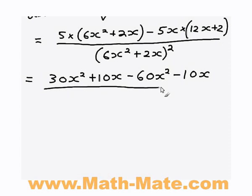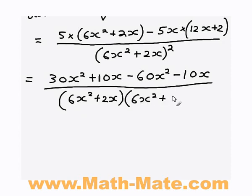Don't forget about the bottom part of the fraction. Now what I'm going to do here is actually instead of writing the squared sign, I'm going to write out the brackets twice. So 6x squared plus 2x. And because it's squared, it's multiplied by itself again. So 6x squared plus 2x. Okay, so we're getting somewhere. Now first of all, the positive 10x and the negative 10x cancel out on the top. So on the top, we're just left with negative 30x squared.